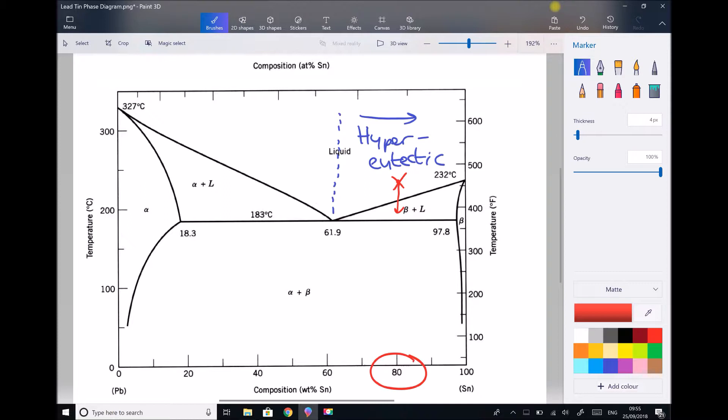When we cool it to 190 degrees, we can see that we're in the beta plus liquid range. So similar to before, we're going to have sections where solid begins to form. Now the big difference this time is that that solid is beta.